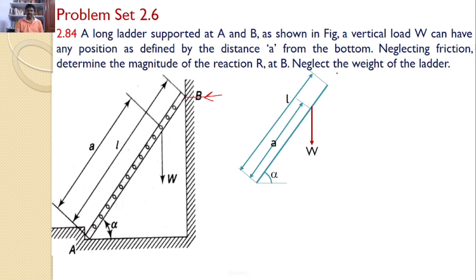That means, if you consider the ladder, there is a weight which acts at a distance of small a from the bottom, that is capital A, and length of the ladder is small l, and the ladder makes an angle alpha. The other reaction forces are, clearly we can see, there is a horizontal reaction force, R_B.